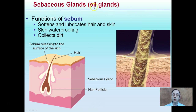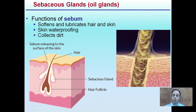So the sebaceous glands — the oil-producing glands — what does this sebum actually do? It provides lubrication to the hair and also the surrounding skin, and it softens both of these regions. Since it is an oil, it's hydrophobic and provides waterproofing and resistance to water for both hair and skin. Being secreted and covering the region, it can also collect dirt to help maintain cleanliness and overall health.